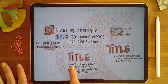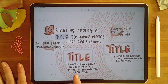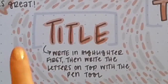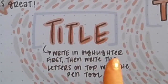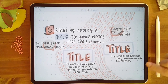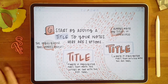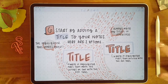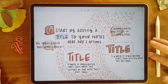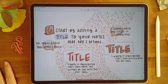Sometimes the faster option is to write the title out with the highlighter tool and then write on top of it with the pen tool. You can check out different examples of how I did titles on these notes — I've embedded a lot of different styles, so you can check that out when you download your copy.